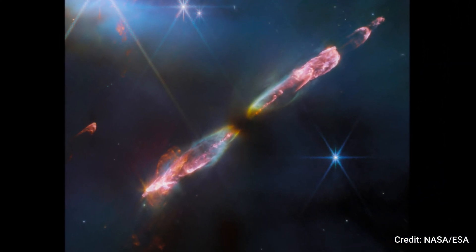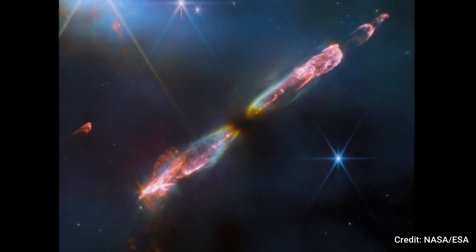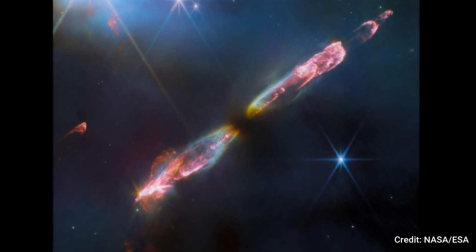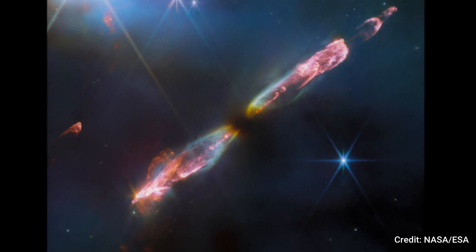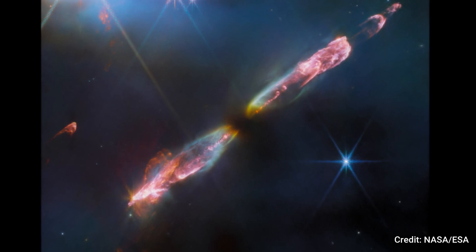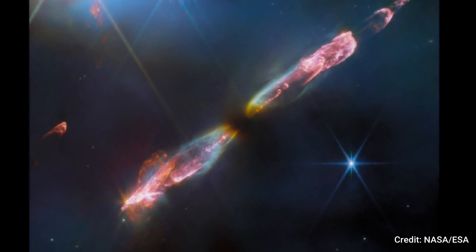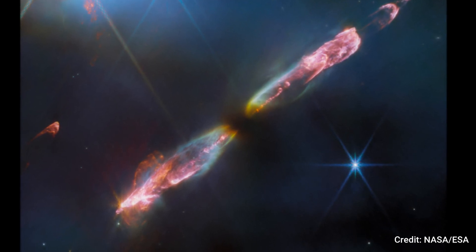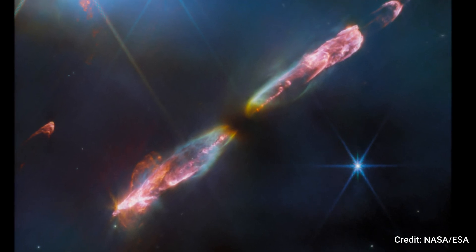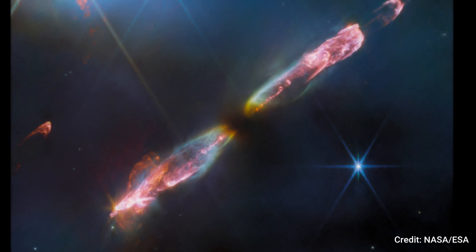Nestled within the constellation Perseus. Within this celestial crucible, a protostar voraciously accretes surrounding gas and dust, fueling its growth, while concurrently expelling material into space in what astronomers term a bipolar outflow.